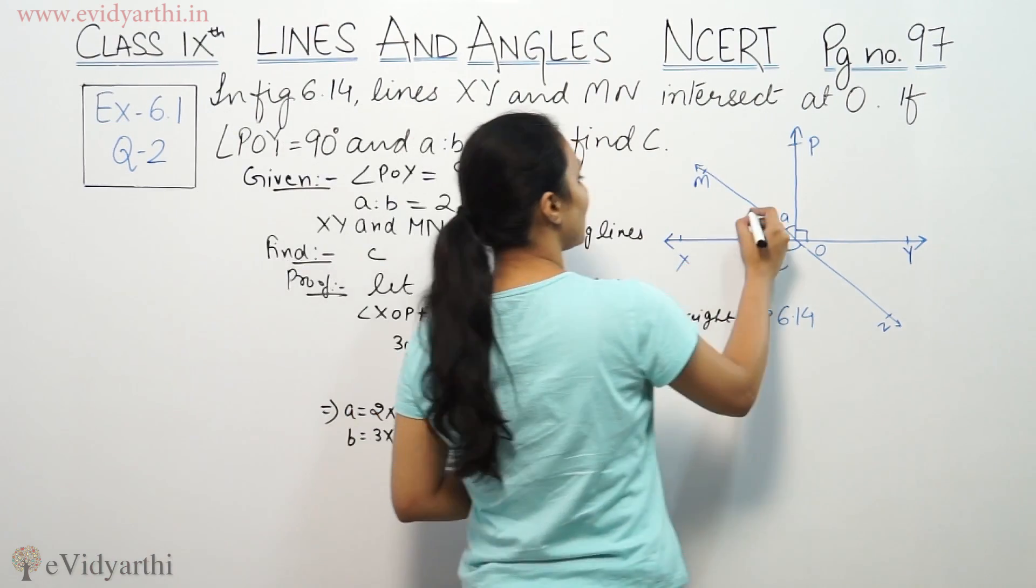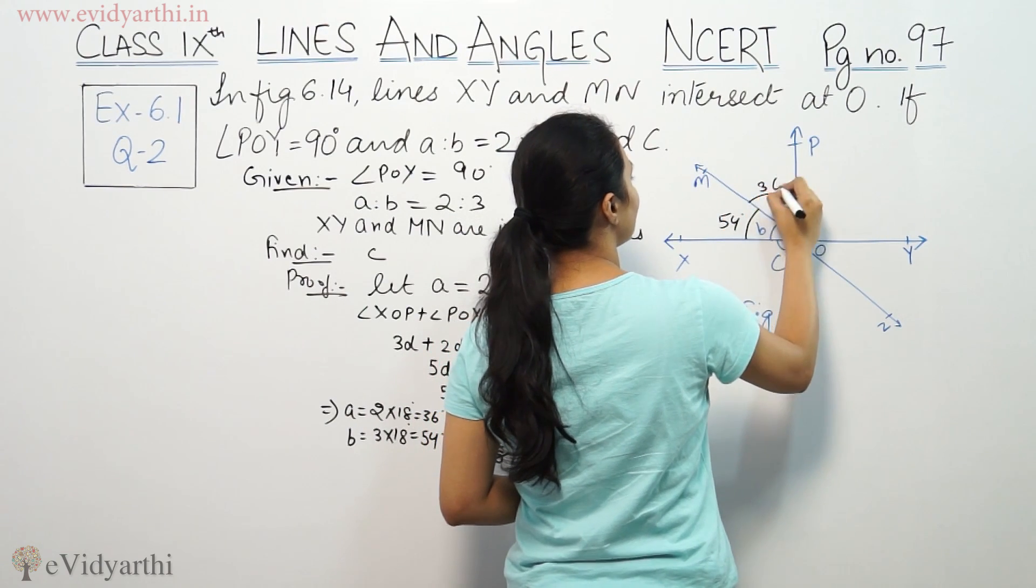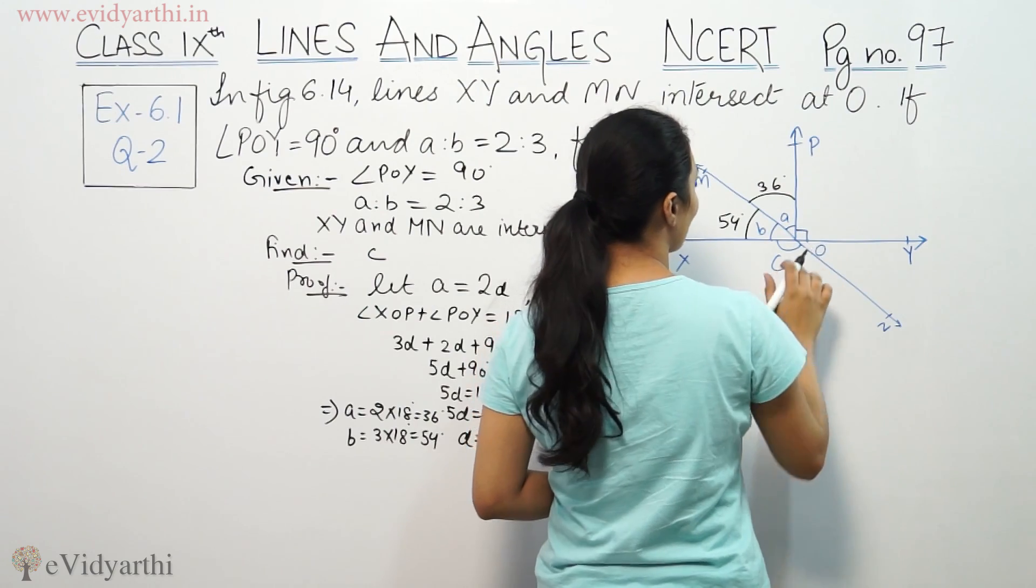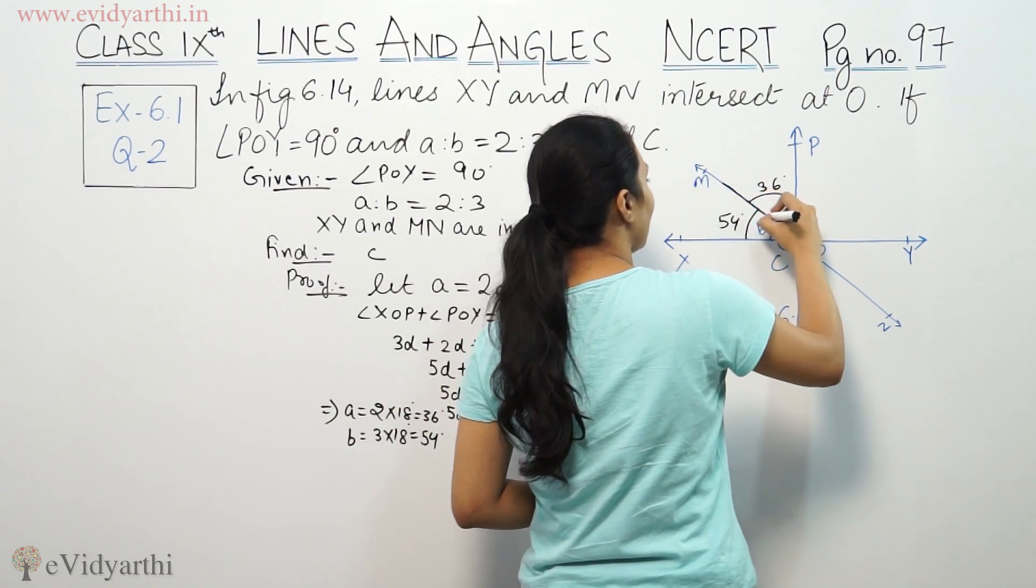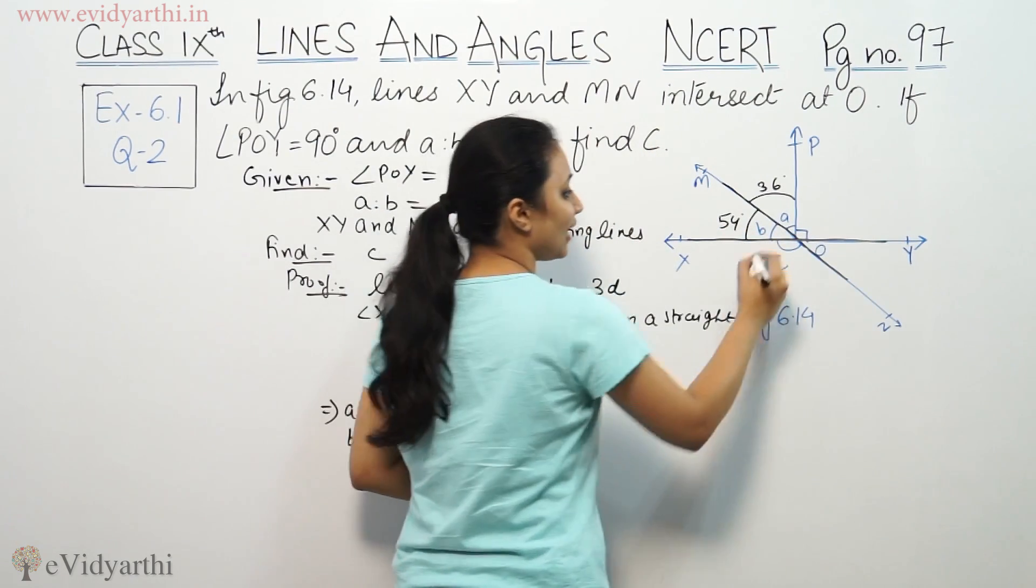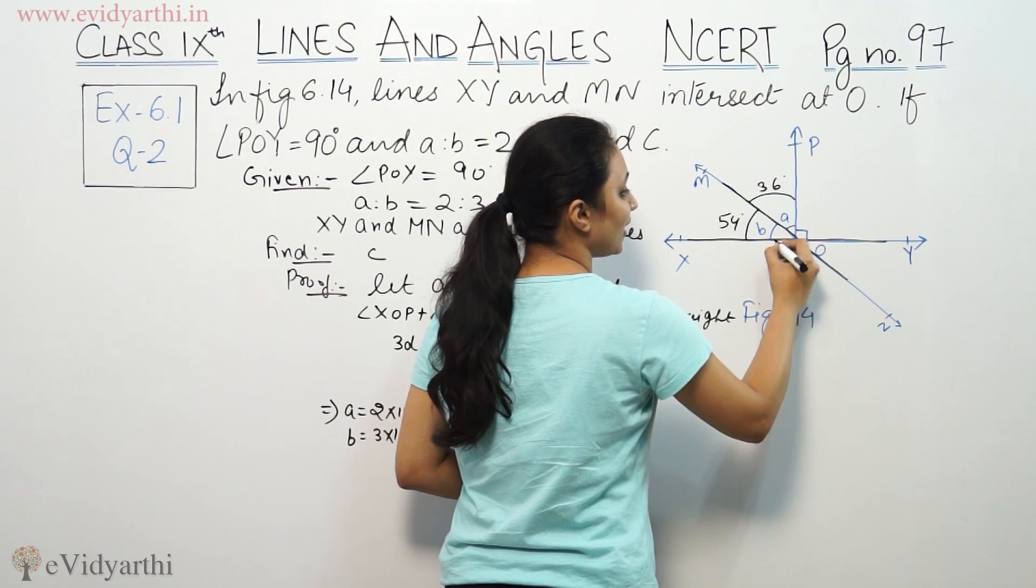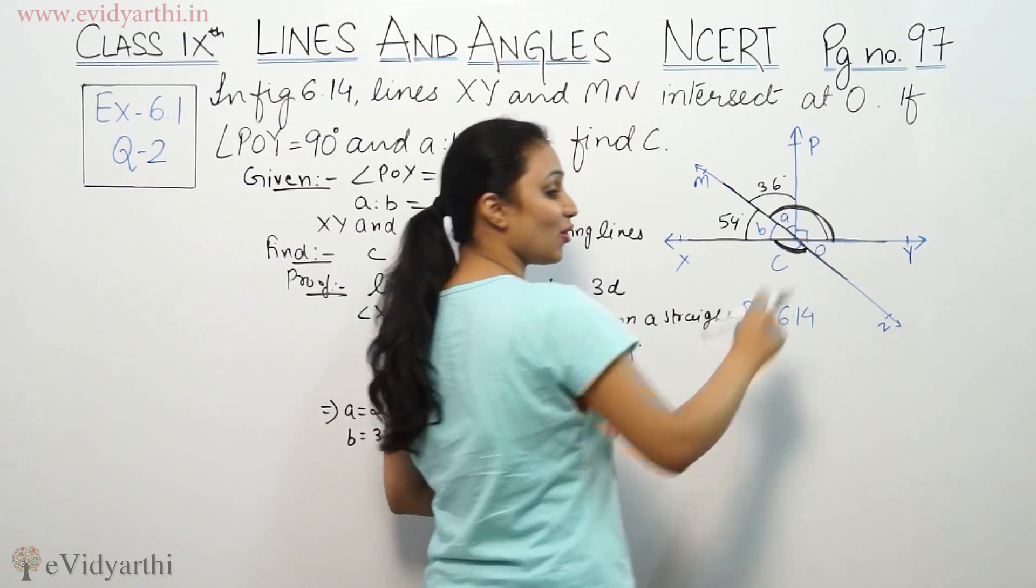So we have a and b, meaning this angle is 54 degrees, this angle is 36 degrees, and this is 90 degrees. Now we need to find c. Since MN and XY are intersecting lines, the intersecting angles are equal.